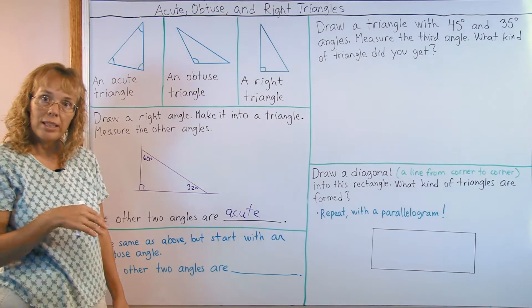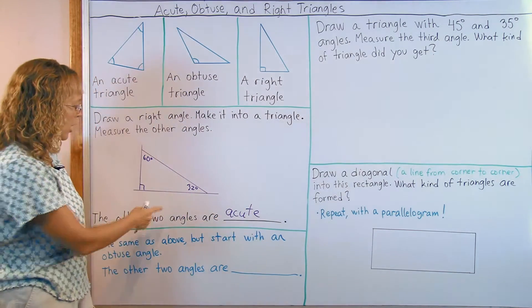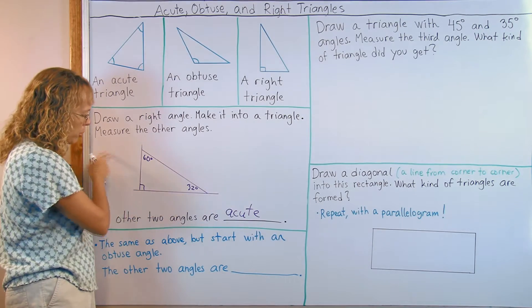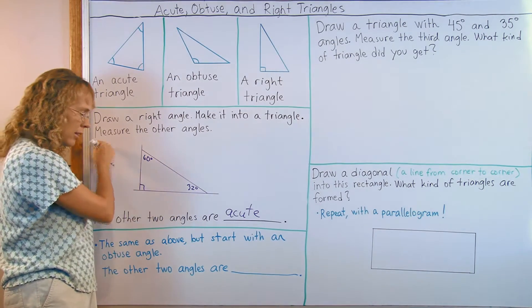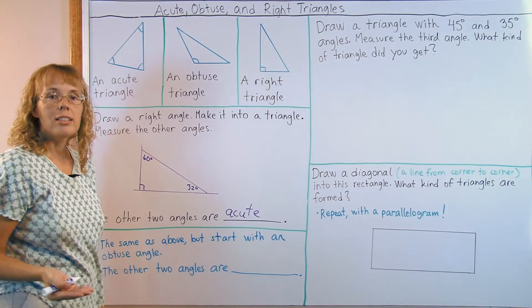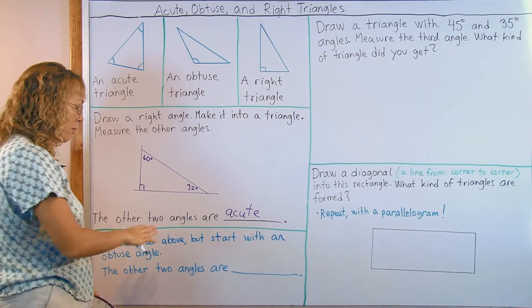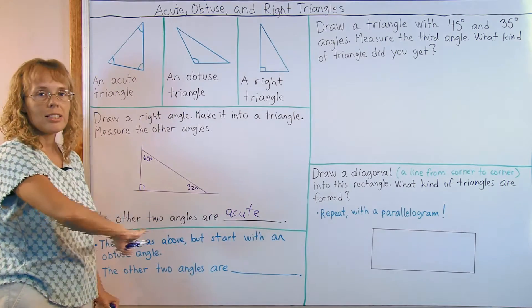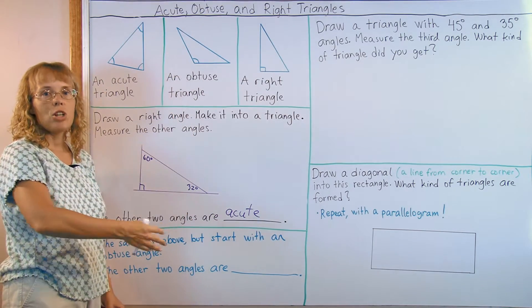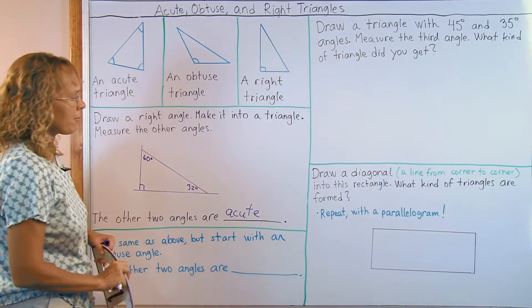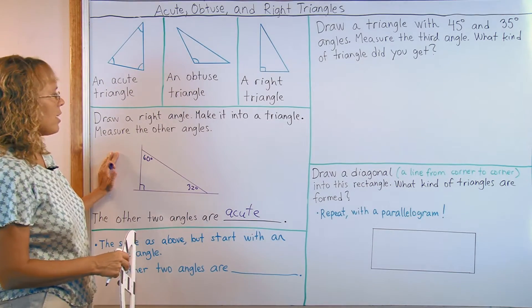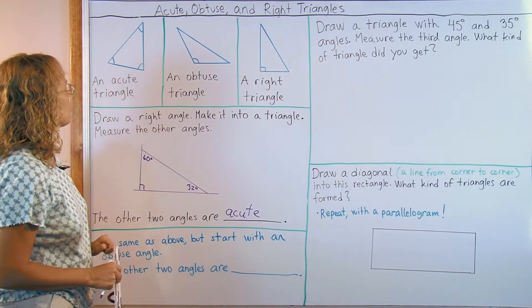And then students should repeat this exercise using an obtuse angle to start with. Draw here an obtuse angle somewhere there. Make it into a triangle and measure the angles and notice that the two angles have to be acute. And they can even make several triangles. Maybe the task would be draw three different obtuse triangles and check, or draw several different right triangles and check.